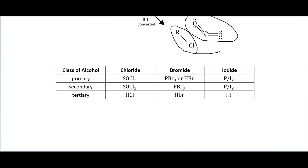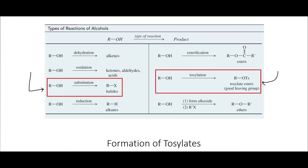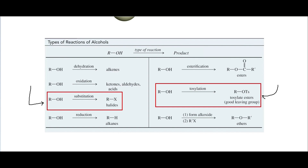To summarize the strategies for halogenating alcohols: for primary substrates, use thionyl chloride for chlorination and PBr3 or HBr for bromination. For secondary substrates, use thionyl chloride or PBr3. For tertiary substrates, HCl or HBr work well for chlorination and bromination, and HI gives better yields of alkyl iodides for tertiary than for other types. That covers everything I wanted to discuss in this video.